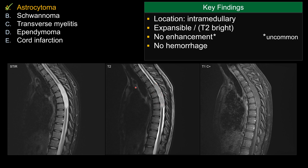There is no evidence of hemorrhage, so there's no hypointensity on T2-weighted sequence. If I see hemorrhage, I would favor ependymoma over astrocytoma. Another small clue: this is a 20-year-old, so a younger or pediatric patient favors astrocytoma, whereas ependymoma tends to occur in older adults.